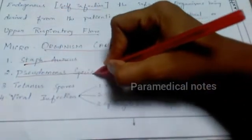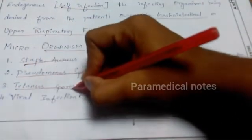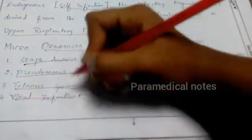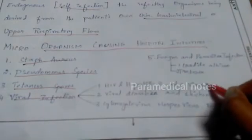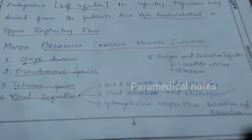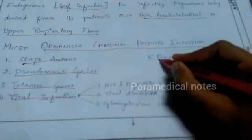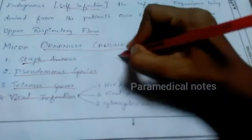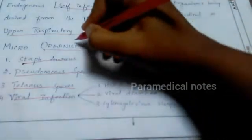The third point is organisms causing hospital infection. You should write five organism names. First is Staphylococcus, second is Pseudomonas species, third is Tetanus species, then viral infections — write any four viral infection names — and also fungal and parasitic infections with any two names.